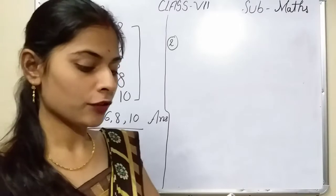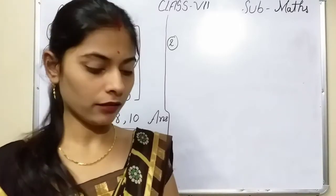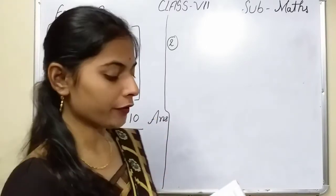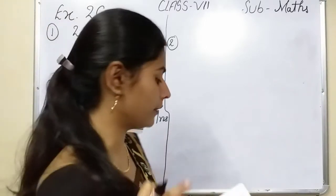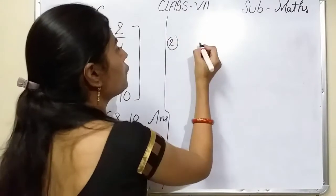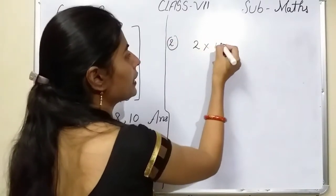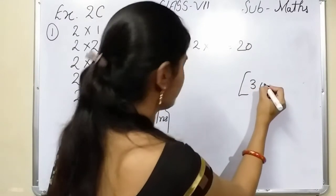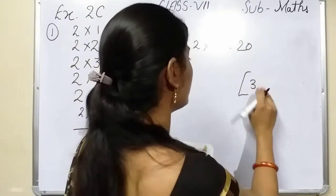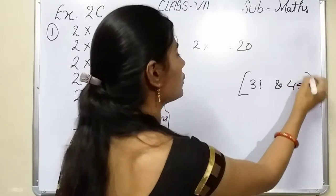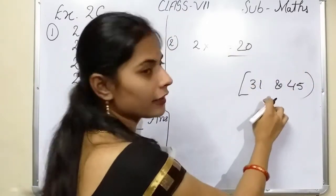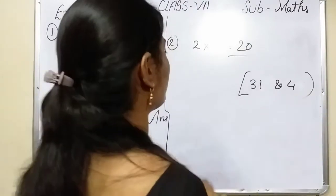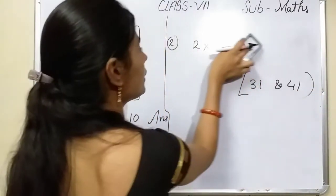Question number two: what are the multiples of 2 between 31 and 41? We found multiples up to 10 before; now we need between 31 and 41. If you write 2×10=20, that is not between 31 and 41, so it is not our multiple.